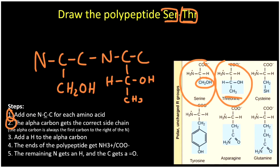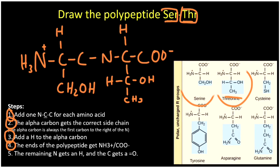Those side chains come from memory or from a reference list. Step three: add a hydrogen to each alpha carbon to complete its four bonds, so we add a hydrogen going up. Step four: the ends of the polypeptide chain remain unchanged — where we have the nitrogen on the end we get NH3+, and where we have the carbon on the end we get COO minus.